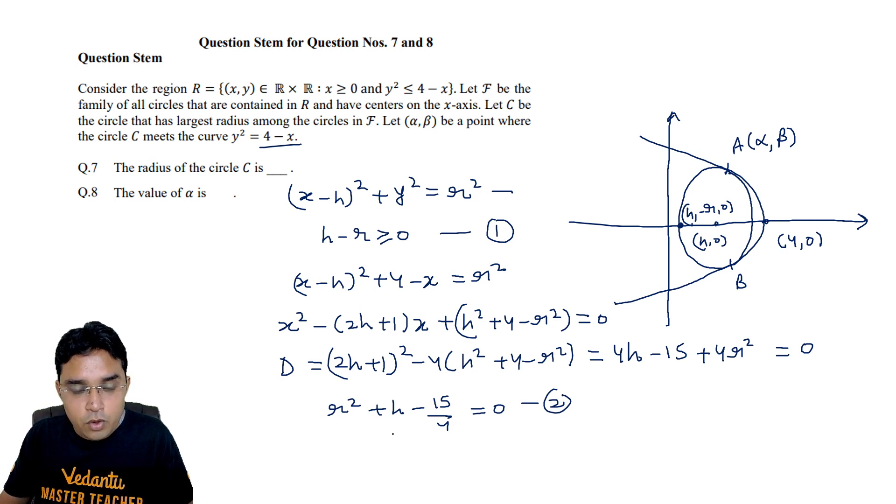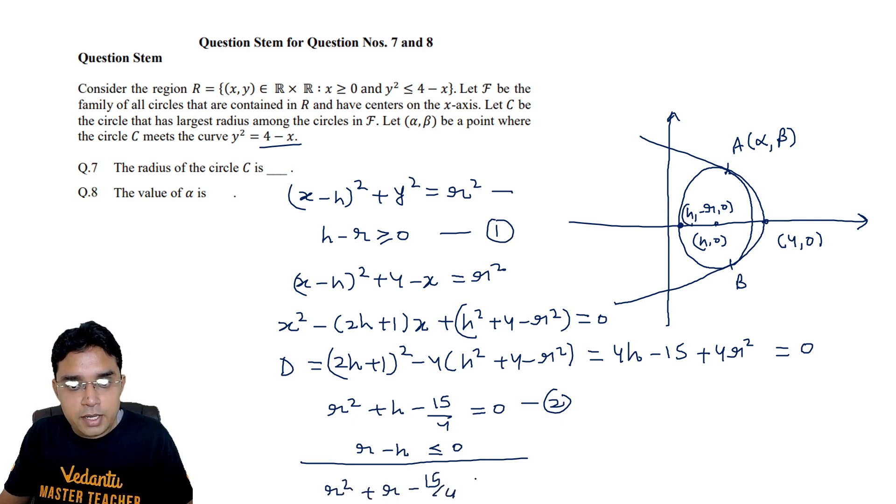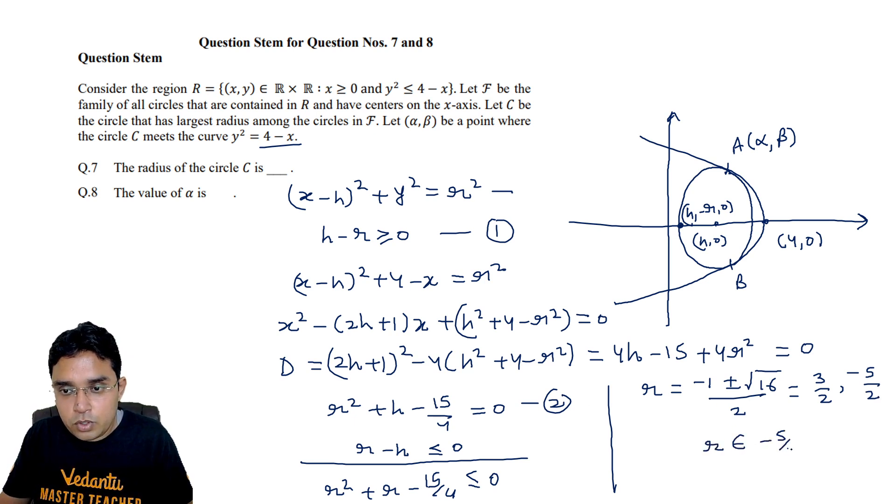Now this equation 1 also if I write it here like this, r minus h should be less than or equal to 0. If we add these two you can see we will have r square plus r minus 15 by 4 less than or equal to 0. Now if we find roots of this quadratic they come out to be r is equal to minus b plus minus root over, this becomes 16 here upon 2. So positive root will be 3 by 2 and the other root will be minus 5 by 2. So here my r should be within minus 5 by 2 to 3 by 2 only. So the maximum value, r maximum here will be equal to 3 by 2.